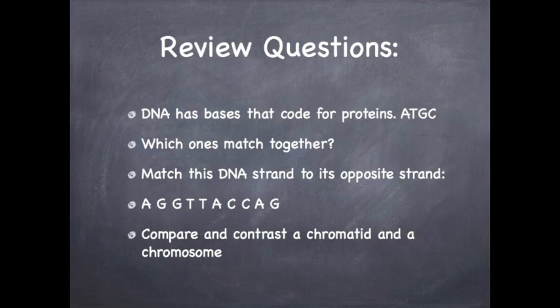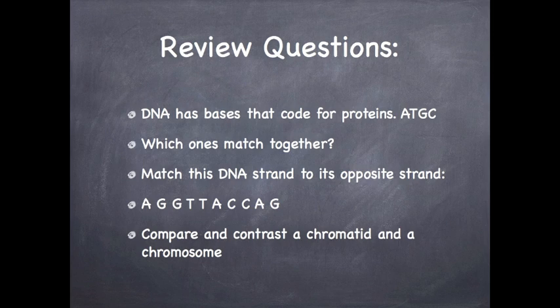We've covered some of the stuff with DNA — we'll go more in-depth later. Remember: DNA has bases that code for proteins — adenine, thymine, guanine, and cytosine. Memorize which ones match together. Practice by matching this DNA strand to its opposite: A, G, G, T, T, A, C, C, A, G. Also, be ready to compare and contrast a chromatid with a chromosome — that will prepare you for the comparison between meiosis and mitosis. Have a good night!